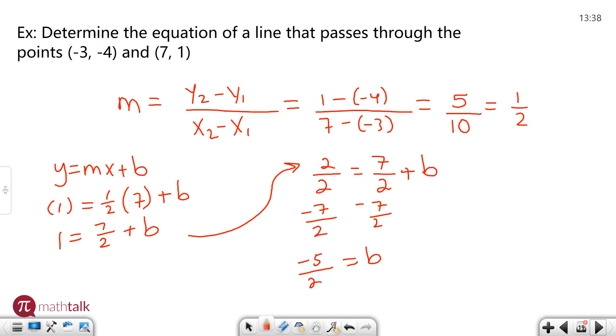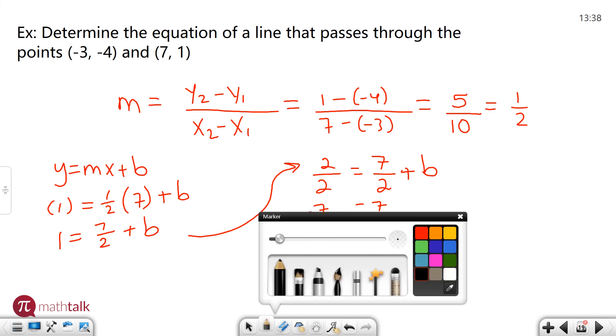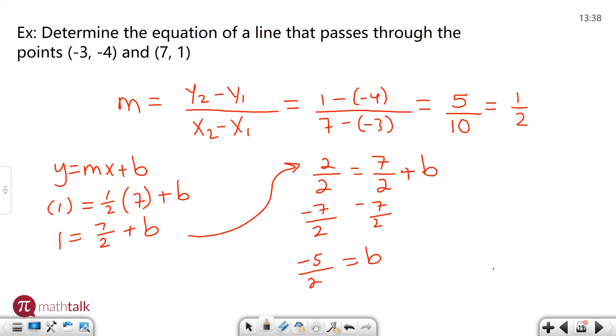One last step to go ahead and plug it into my final equation, which I'm going to use a different color for just to make it stand out. Y equals m which is my slope which is one half times x, which is just x, and then my b value of minus five over two.